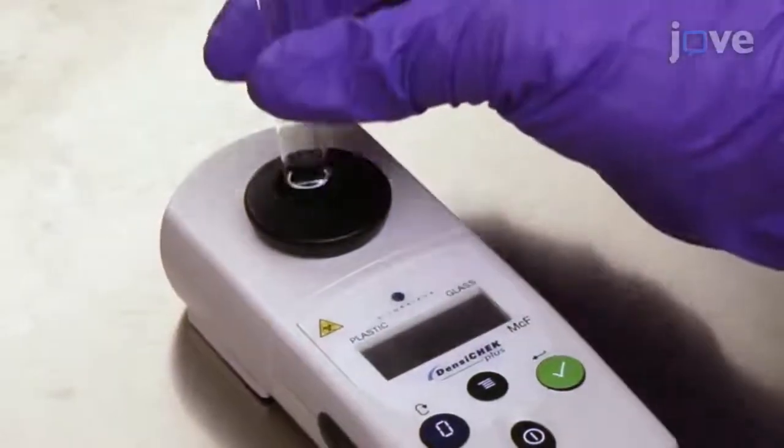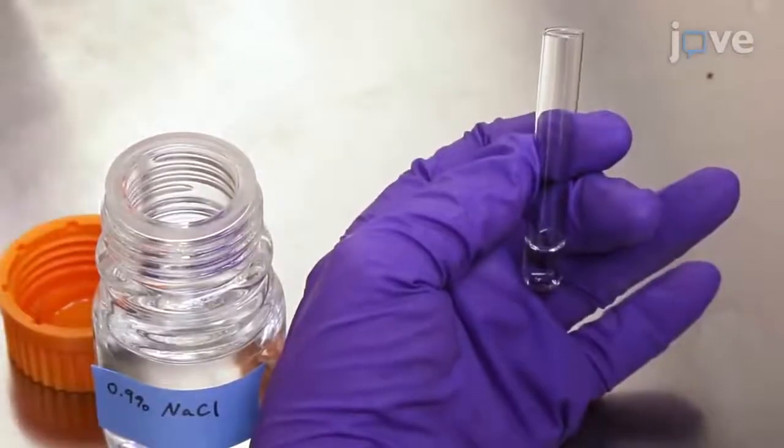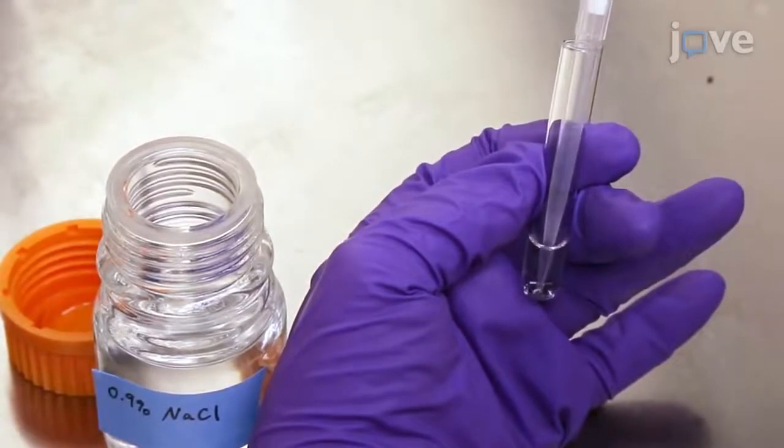Check the concentration of bacteria using a McFarland reader. Adjust the concentration by adding more saline or more bacteria to achieve a 0.5 McFarland turbidity reading.